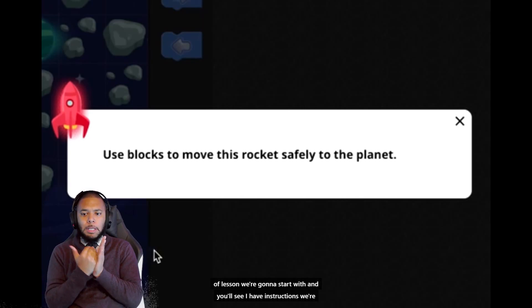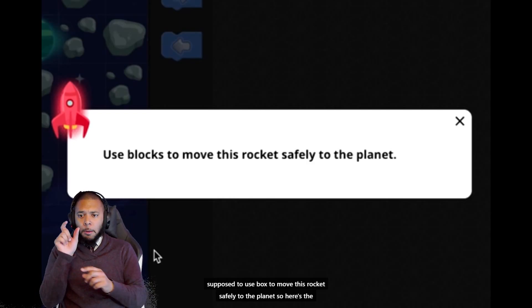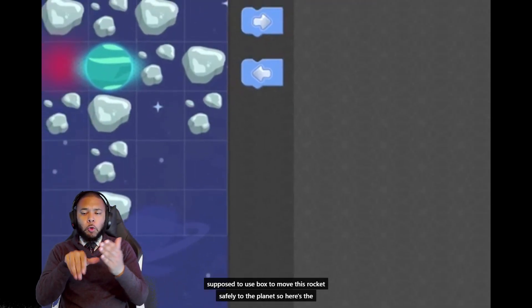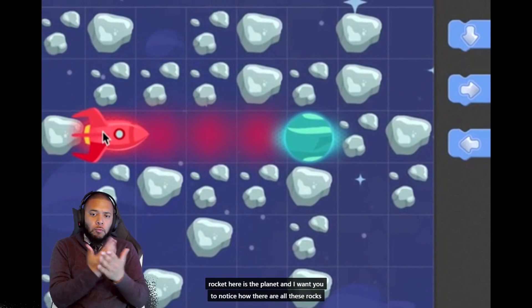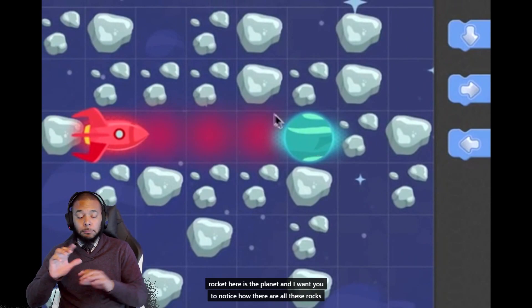You'll see I have instructions. We're supposed to use blocks to move this rocket safely to the planet. So here's the rocket, here is the planet, and I want you to notice how there are all these rocks.